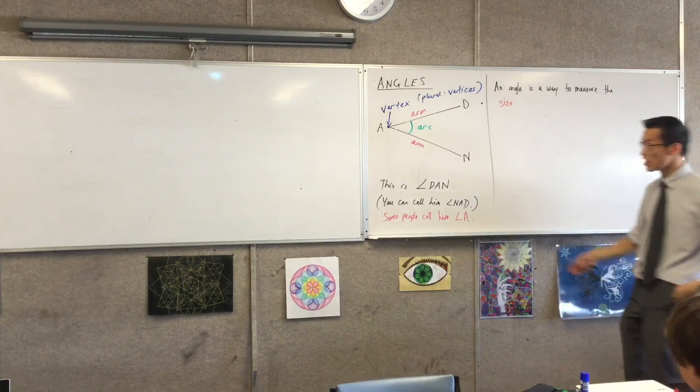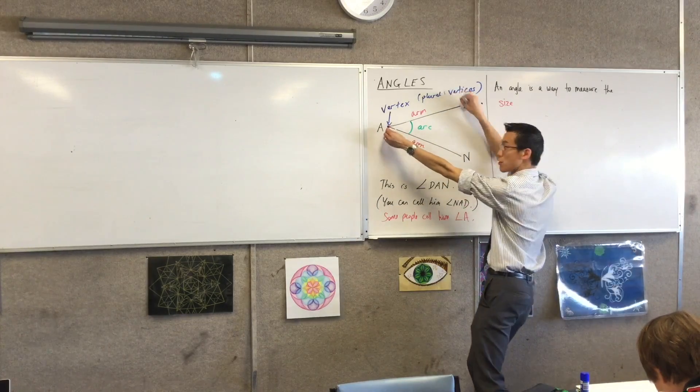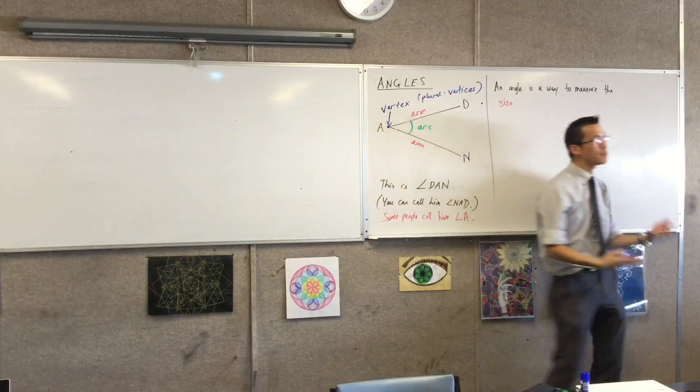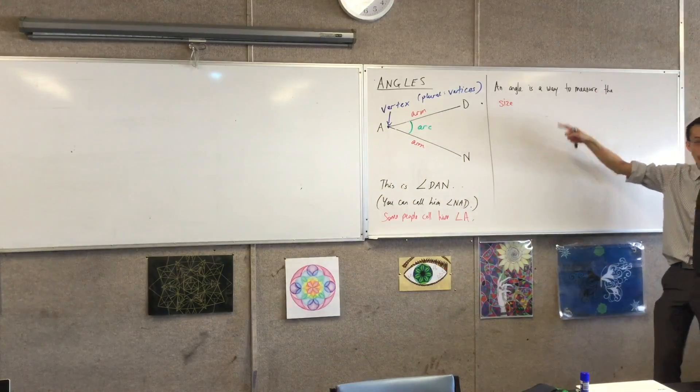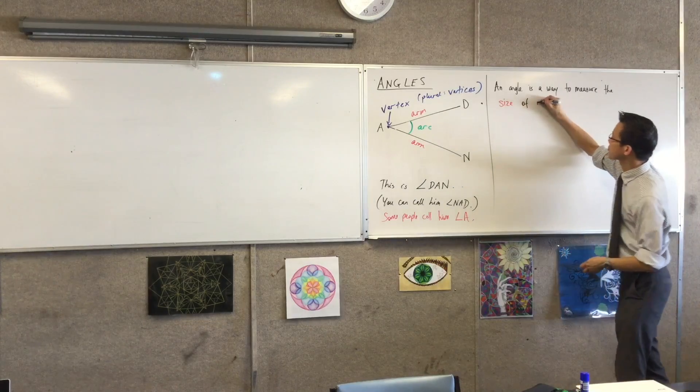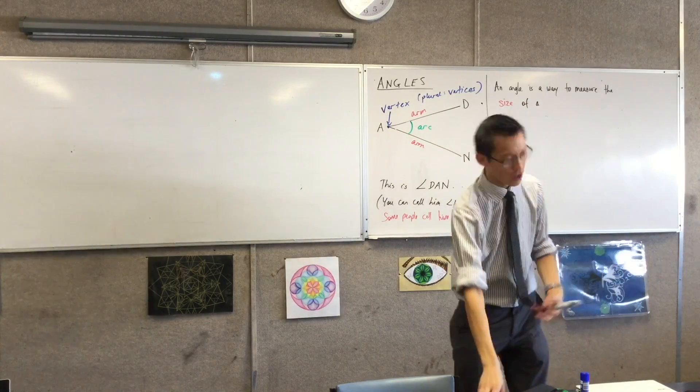Rotating it? Yeah, it's kind of like you're sort of taking it and rotating it this way, right? Or a more simple word would be, you're turning, aren't you? Okay? So an angle is a way to measure the size of a rotation or a turn.